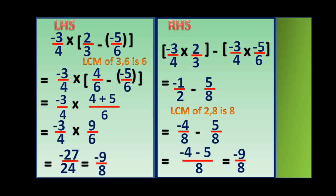Now you can see both the left hand side and right hand side are the same — you have got the same answer on both sides. So LHS is equal to RHS. Hence it is proved. When you use distributivity, you split a product as a sum or difference of two products.